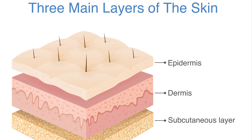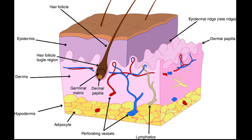The epidermis is composed of the outermost layers of the skin. It forms a protective barrier over the body's surface, responsible for keeping water in the body and preventing pathogens from entering. It is a stratified squamous epithelium composed of proliferating basal and differentiated suprabasal keratinocytes. Keratinocytes are the major cells, constituting 95 percent of the epidermis, while Merkel cells, melanocytes, and Langerhans cells are also present.